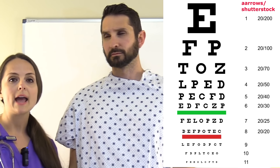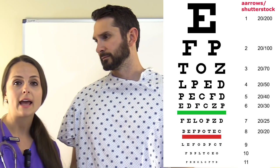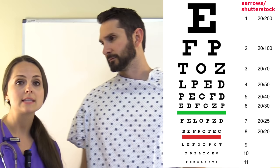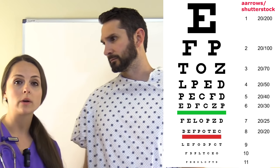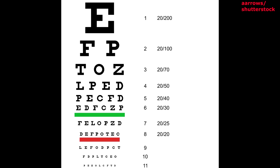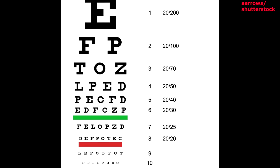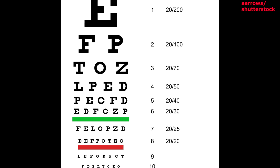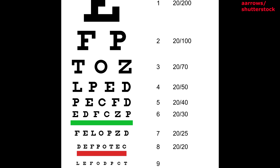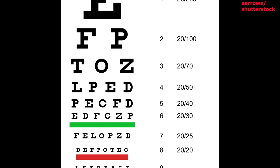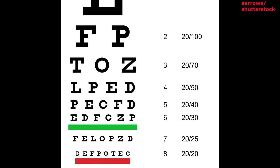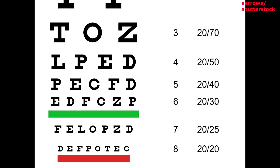He read from line 8, so that means that he has 20/20 vision. This means that he can see the same line of letters at 20 feet that a person with normal vision can see at 20 feet.